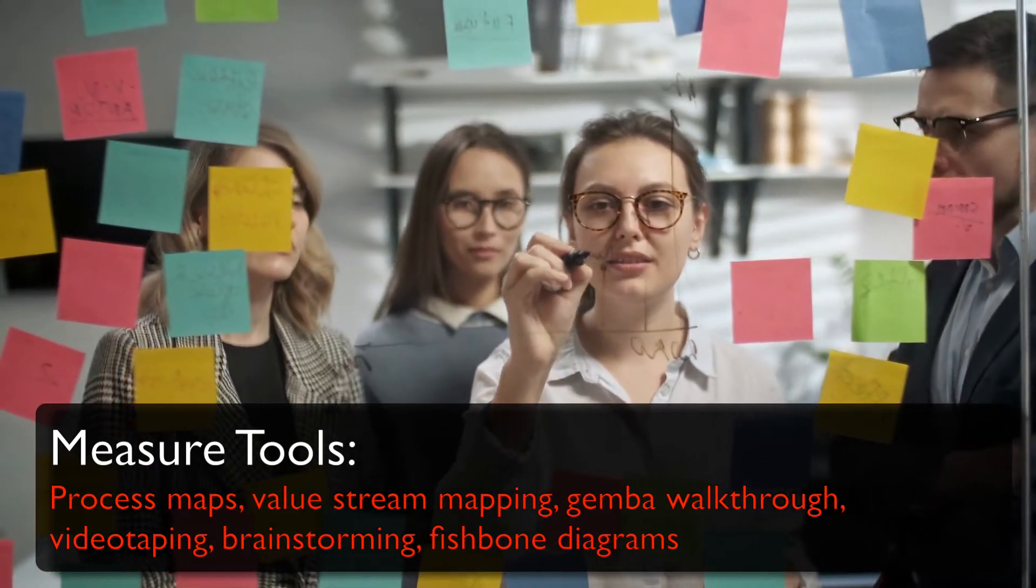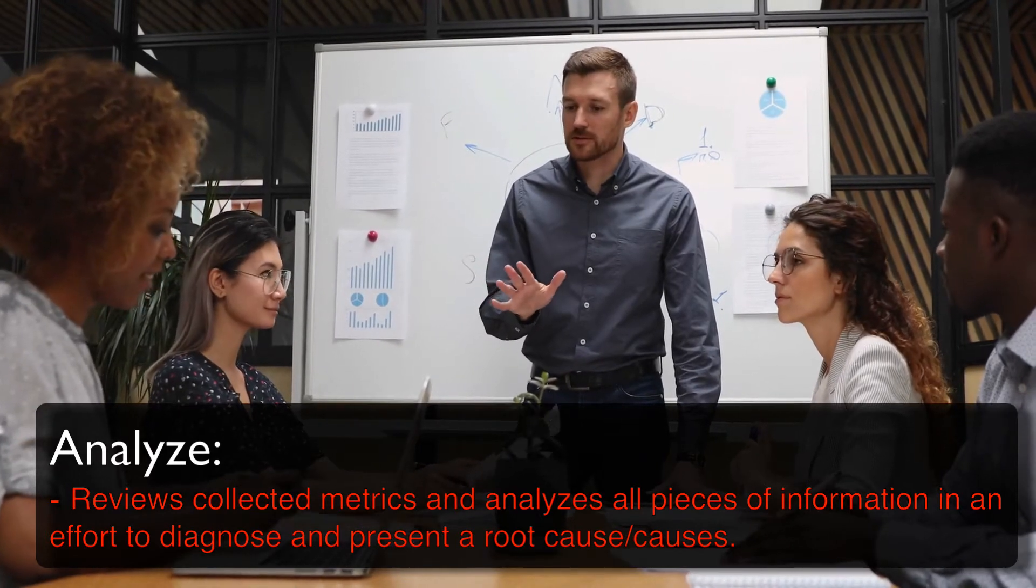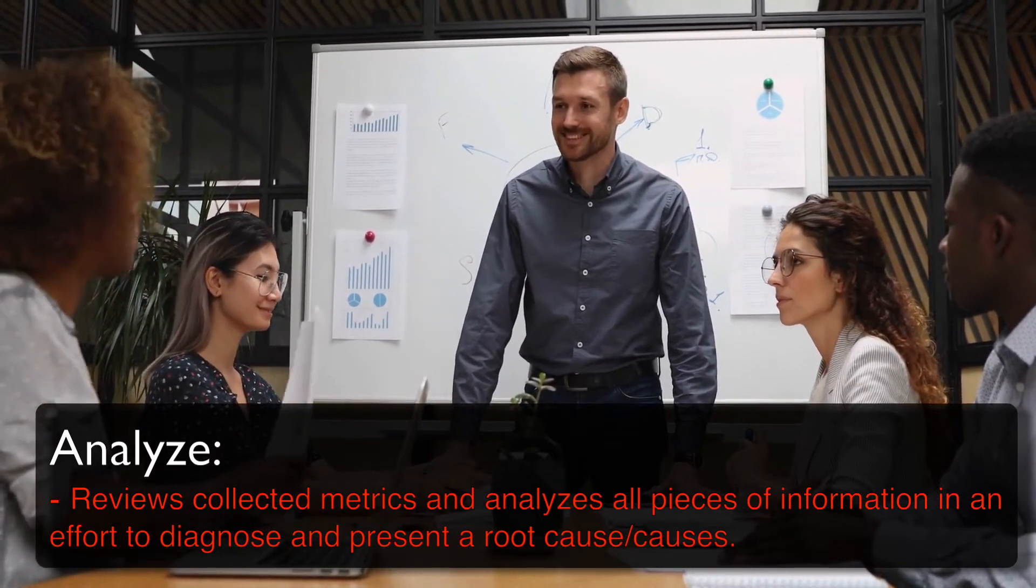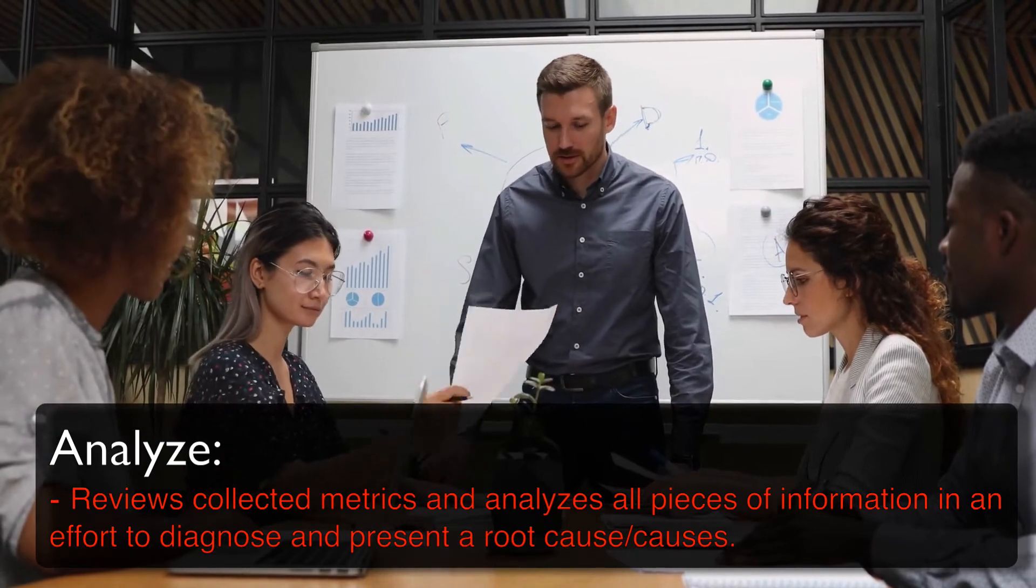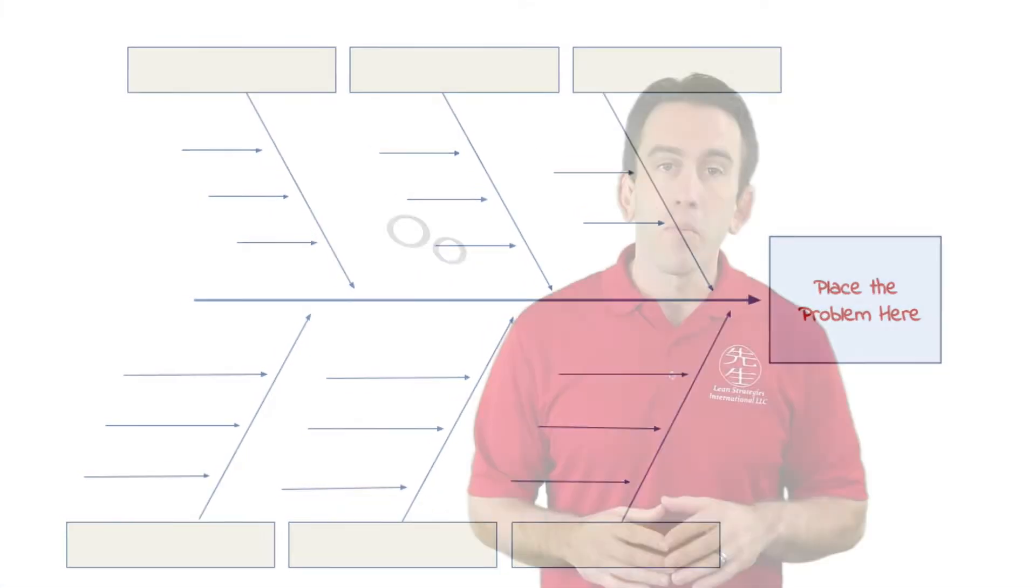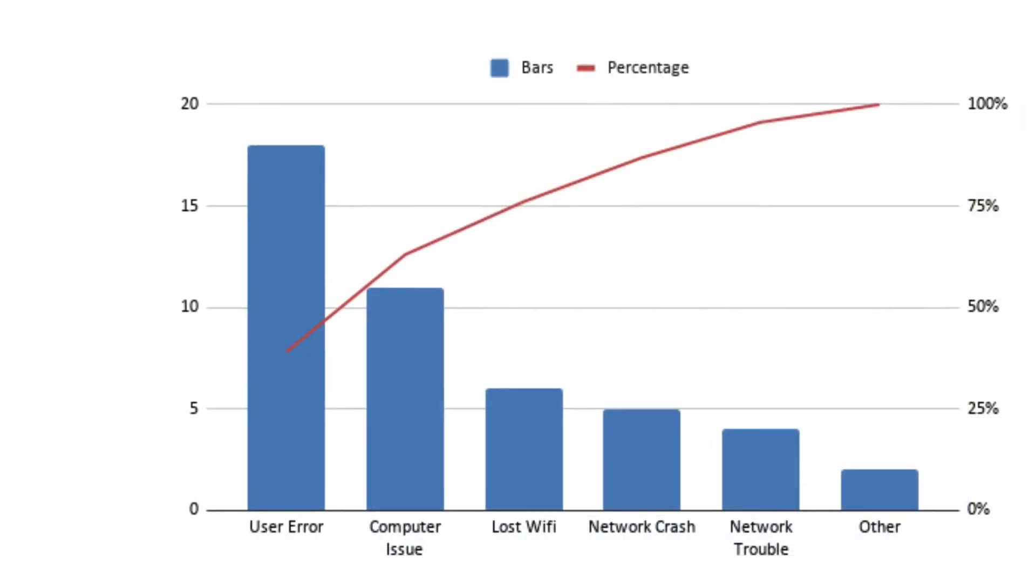The third stage reviews the collected metrics and analyzes all pieces of information. A variety of tools can be used to diagnose and present a root cause. Some tools that will help you understand the various issues you will find in the stage are fishbone diagrams, five whys, control charts, process maps, check sheets, Pareto charts, and scatter diagrams. Each of these tools will help you reveal different levels of causation so that you can look to remove the actual cause of the problem and not just the symptoms that occur as a result of the root cause.